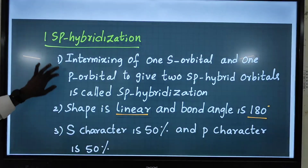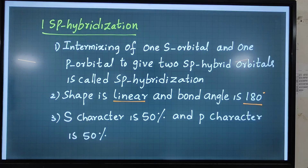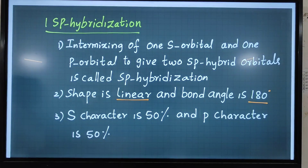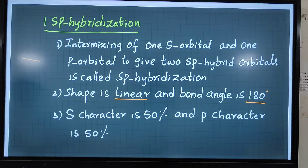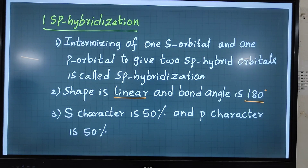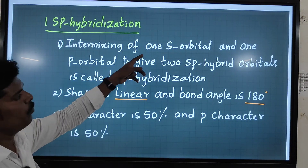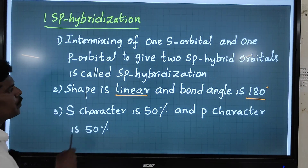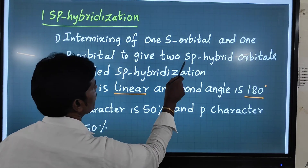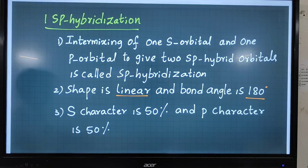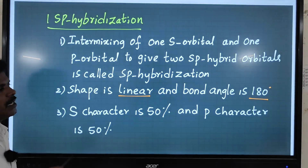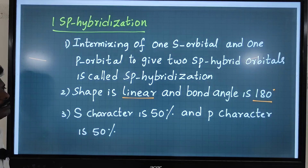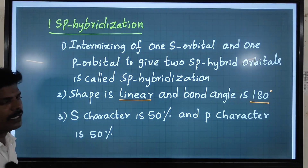In this video I will explain sp hybridization. The heading itself suggests the definition: the intermixing of one s orbital and one p orbital to give two sp hybrid orbitals is called sp hybridization. The shape is linear and the bond angle is 180 degrees.